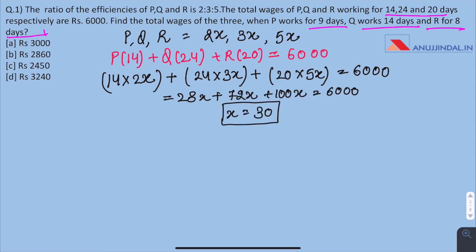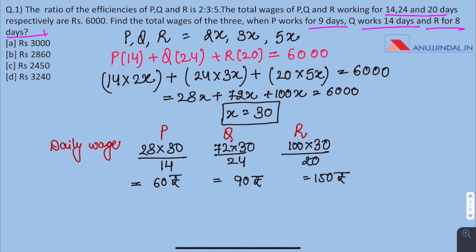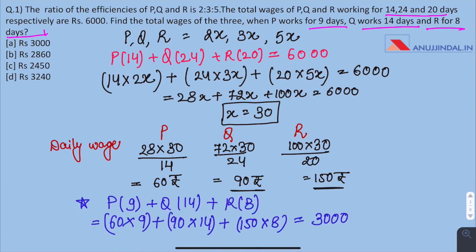Now we have to find the daily wages of P, Q and R. When P works for 14 days, he gets 28X. On putting the value of X and after dividing it by 14, we get the wage per day for P which is 60 rupees. And similarly, solving for Q and R as well. So the daily wage of P is 60 rupees, for Q it is 90 rupees and for R it is 150 rupees. Now as per the question, if P works for 9 days, Q works for 14 days and R works for 8 days, then the total wages would be 3,000 rupees. Option A is the answer.